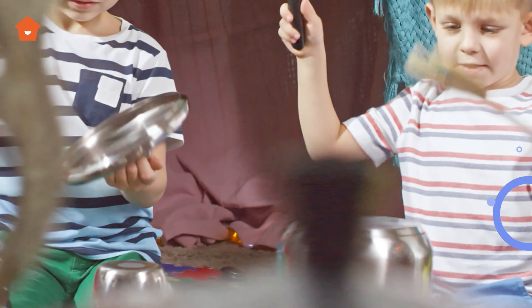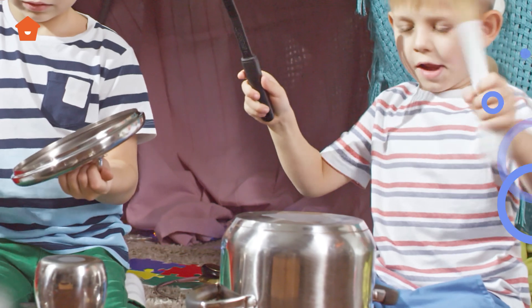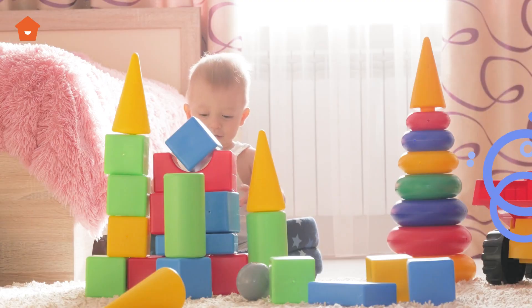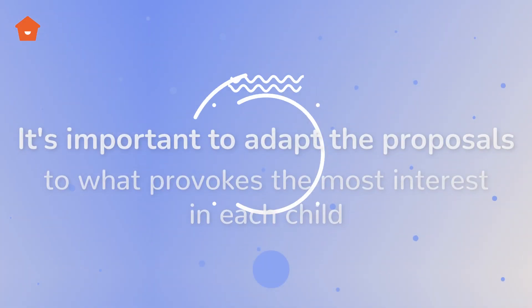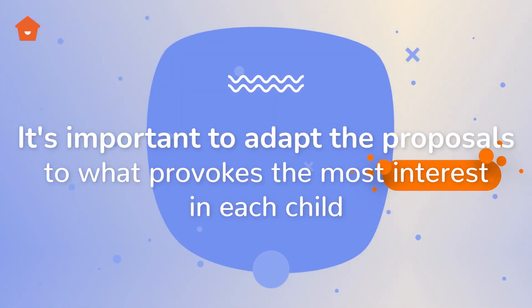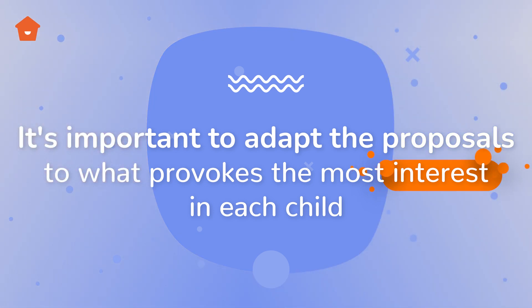You can also exchange roles. You can put on a song to follow along with a pan and pretend to be drummers. You can also build different types of buildings, towers, or castles. When doing any of these activities, it's important to adapt the proposals to what provokes the most interest in each child.